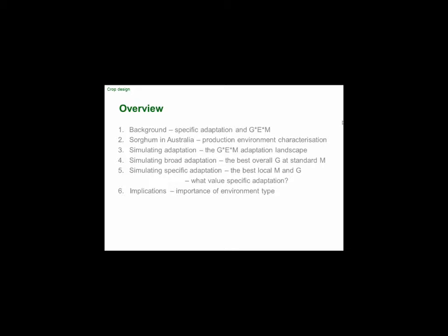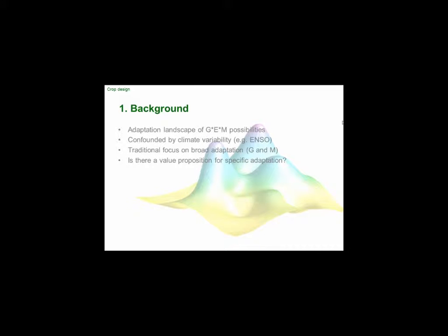Then specific adaptation — what often happens is a plant breeder will produce an elite hybrid or line and agronomists will go and adapt its management. So what is the best local management with the best general genotype? But what if you start to think about changing those things simultaneously, which we don't do too much of? That's maybe where we can make the next advance. Finally I want to look at what's the value of specific adaptation for simulating, and come back to why environment type is so important. The notion of the adaptation landscape comes from discussions a long time ago with Mark Cooper.